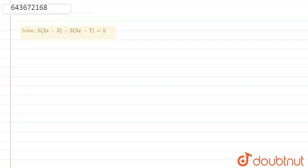Hello friends, here the question is solve 5(2x - 3) - 3(3x - 7) = 5.